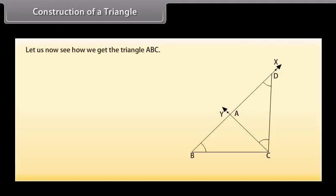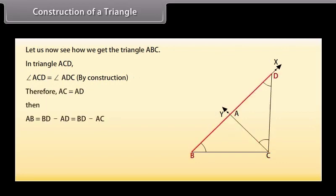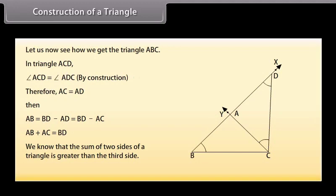Let us now see how we get triangle ABC. In triangle ACD, angle ACD equals angle ADC by construction. Therefore, AC equals AD. Then AB equals BD minus AD, which equals BD minus AC, or AB plus AC equals BD. We know that the sum of two sides of a triangle is greater than the third side. Therefore, ABC is a triangle.